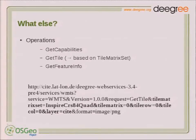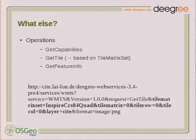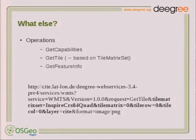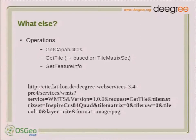GetTile is based on tile matrix sets. Here we have an example request for a GetTile request. There is something in bold: this is the definition for the request of a tile with a specific tile matrix set — in that case it's TileMatrixSet InspireCRS84Quad — the tile matrix, the tile row, and tile column. Of course you also have a layer. With those parameters you are able to provide maps through this standard.